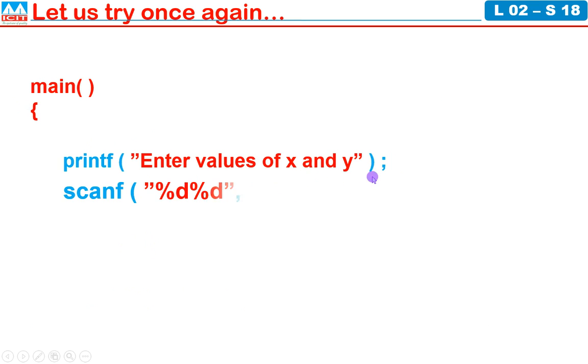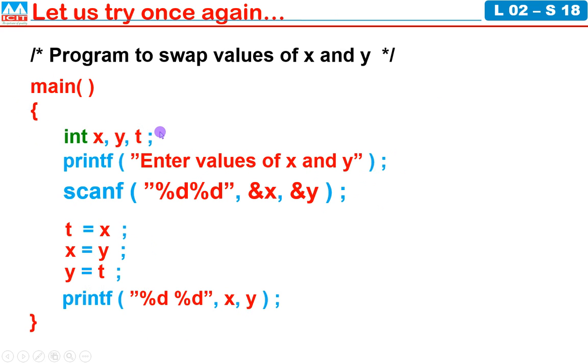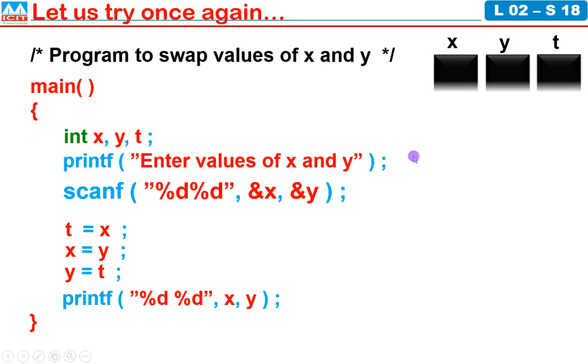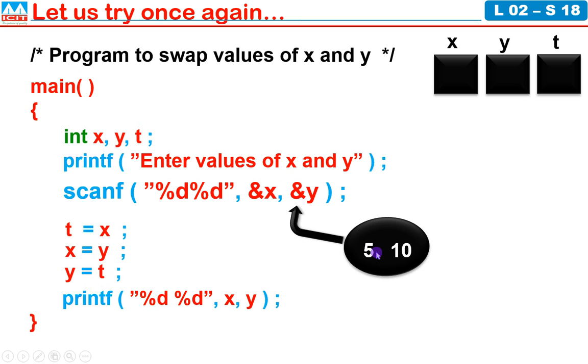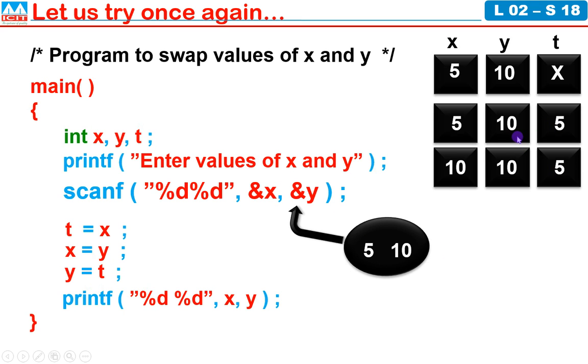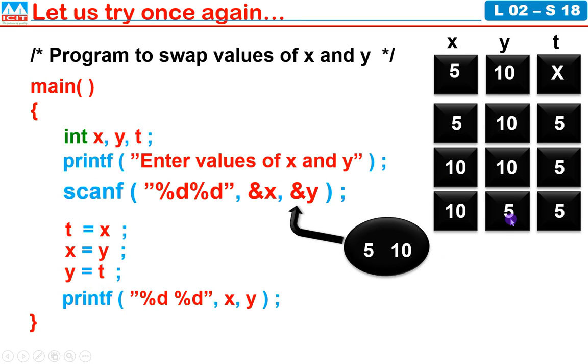Let us try with another logic. Now we are starting our program with main, then open brace, print Enter values X Y, then scanf percentage d percentage d address of X address of Y. T equal to X, X equal to Y, Y equal to T. Printf percentage d percentage d X Y. Closing brace. You need to define the variables X Y and T. If you try to run this program, the execution begins with main. You type 5 and 10. 5 will be passed to X and 10 will be passed to Y. The value of T will be garbage, unexpected. T equal to X: X value will be stored in variable T. X equal to Y: Y value will be stored in variable X. Y equal to T: T value will be stored in variable Y. If you print X and Y you will get 10 comma 5. 100 percent successful.